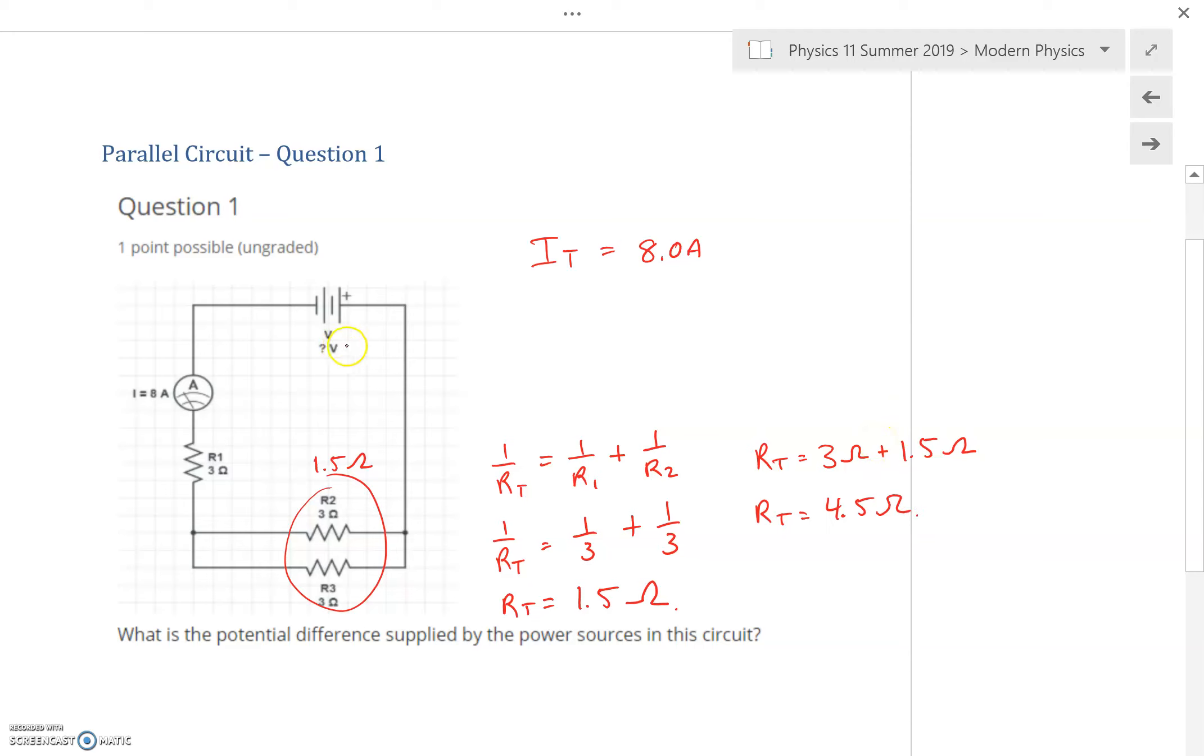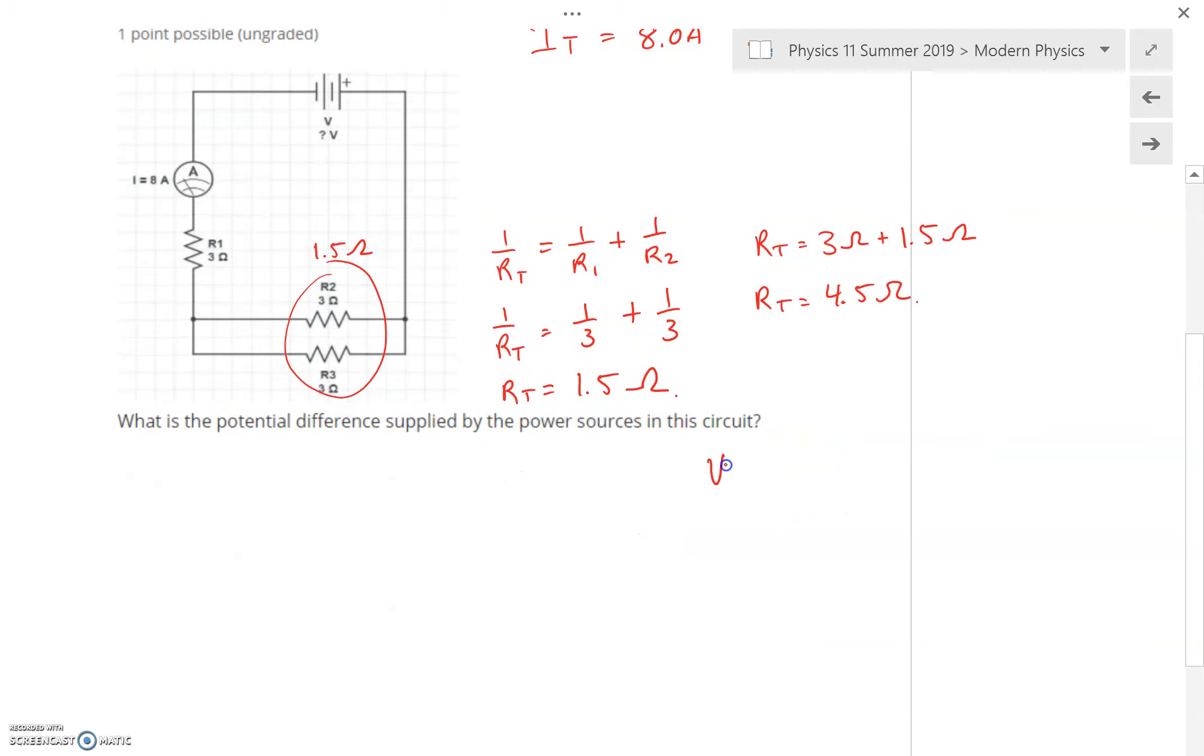To calculate our total voltage, we go back to our formula: VT is equal to IT times RT. Putting our values in, we just simply put in the current, which was 8 amps, times our resistance, which we calculated to be 4.5 ohms.